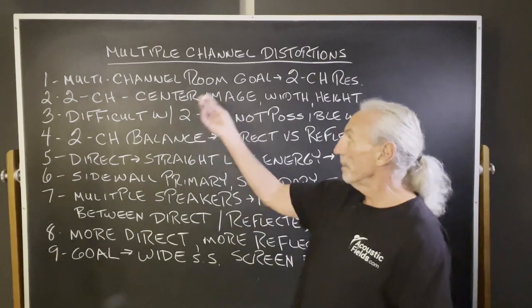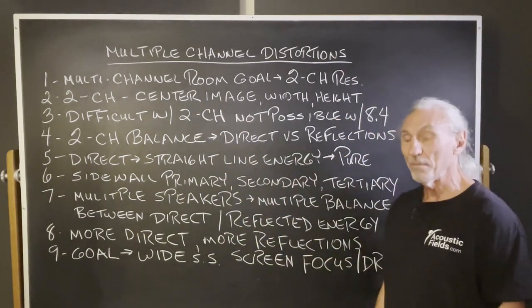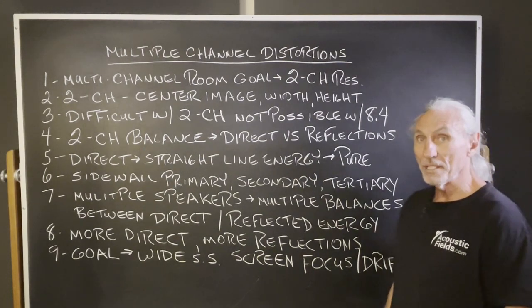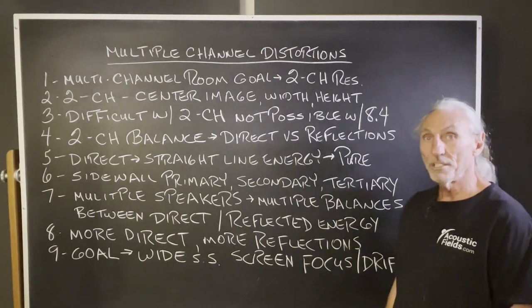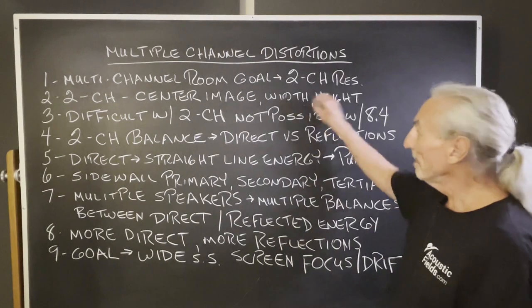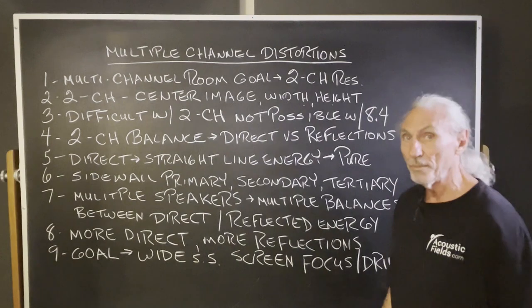What do we have with two channel? We have a center image, width and height. People say you get depth. I don't know, maybe if you have enough space, I suppose. But most of the systems I see, the speakers are right against the front wall. There's no depth in that presentation value. So width and height for sure you can get. It's a little bit difficult with two channel, not impossible.